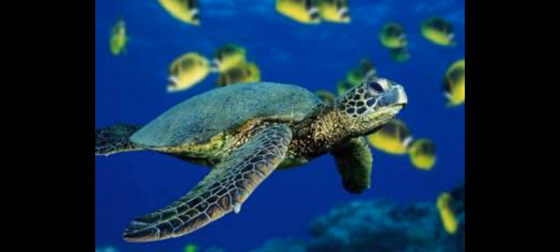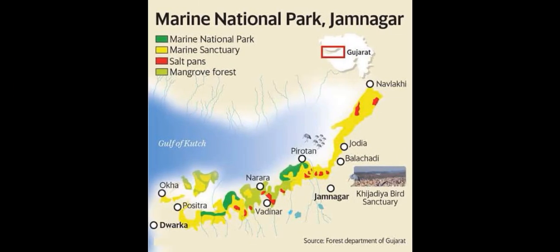Coming to the fauna section, found in Gulf of Kach Marine National Park are 70 species of sponges, 90 species of birds, 52 species of corals out of which 42 species are hard corals and 10 species are soft corals. 30 species of crabs, lobsters and shrimps are also found in Gulf of Kach Marine National Park.